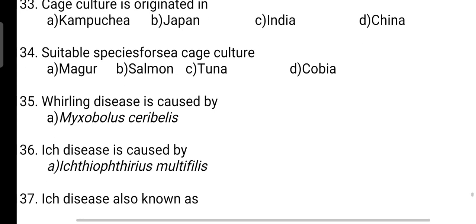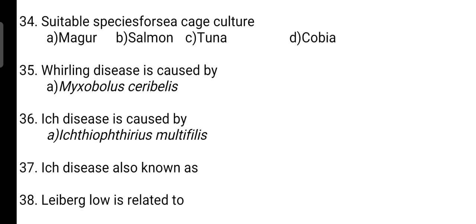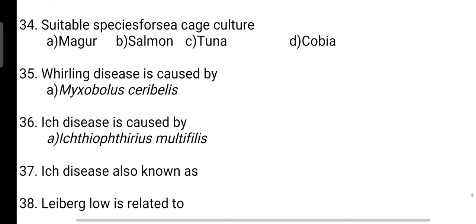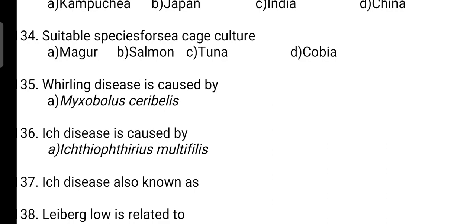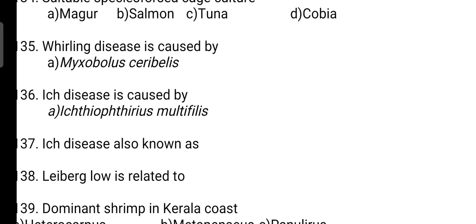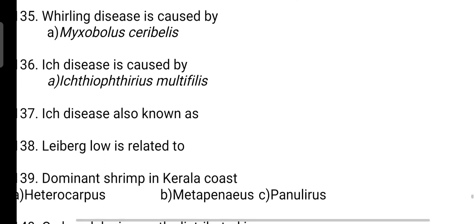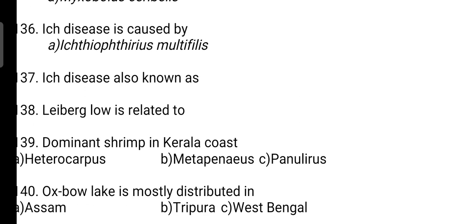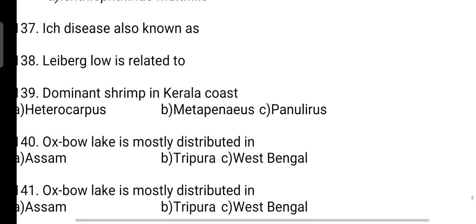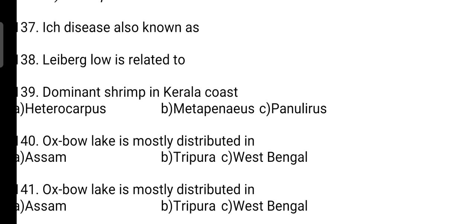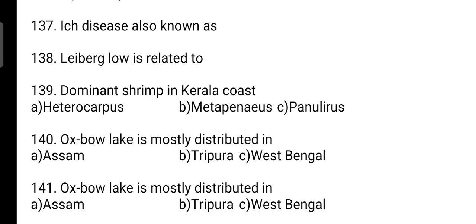Membrane of ovary attached with air bladder: correct answer is Option A — it is mesovarim. Example of submerged plant: correct answer is Option A — it is Hydrilla. Quality of fish is related to estimation of: correct answer is Option A — it is related to estimation of K value. Cage culture originated in Cambodia, also known as Kampuchea earlier. Liebig's law states that the rate of growth of an organism depends on the scarcest or lowest element.